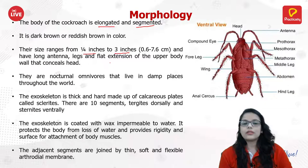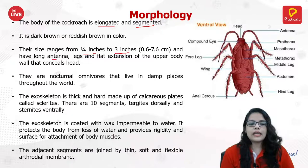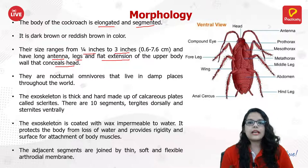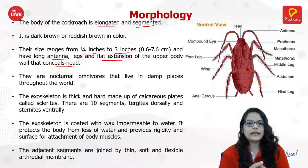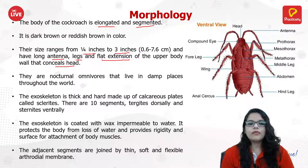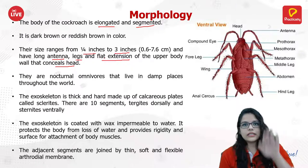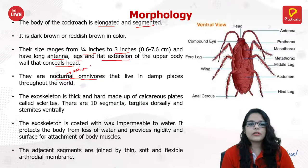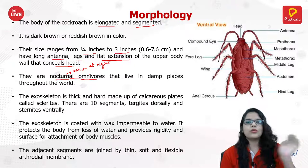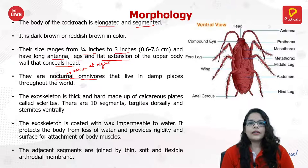They have two antennae and around six legs — three on the left side, three on the right — and a flat extension of the upper body that conceals the head. They are nocturnal omnivores, active at night. When you switch off the lights and later turn on the kitchen light, you'll see numerous cockroaches there.